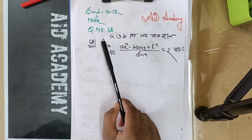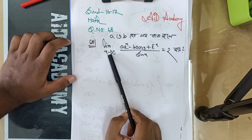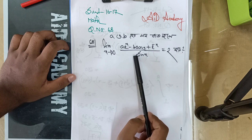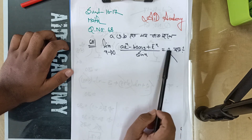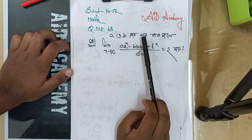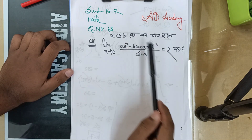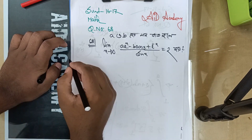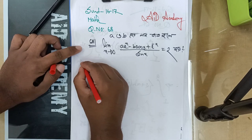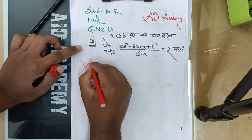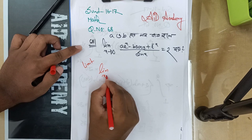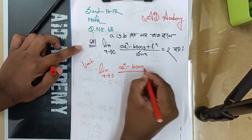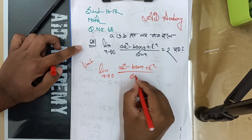This is the question. What is your question? We have: as x tends to 0, [a·e^x minus b·cos(x) plus e^(−x)] divided by sin(x) is equal to 2. We need to find the values of a and b such that this limit equals 2.